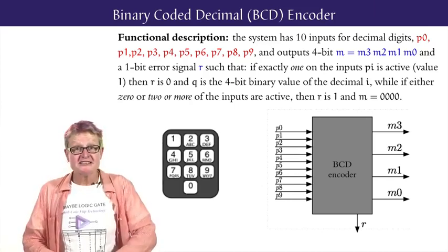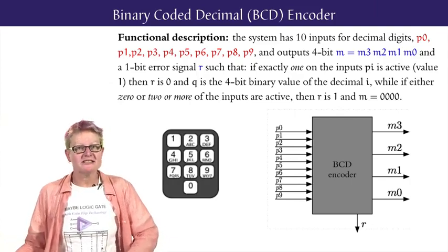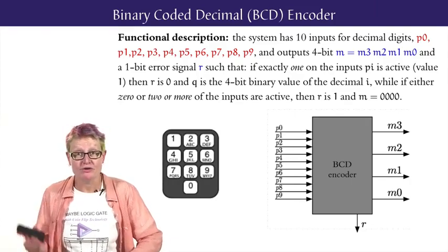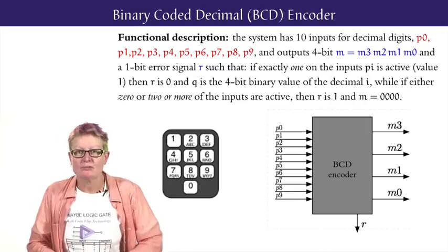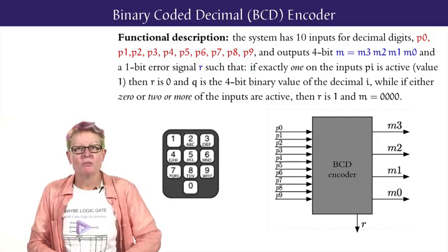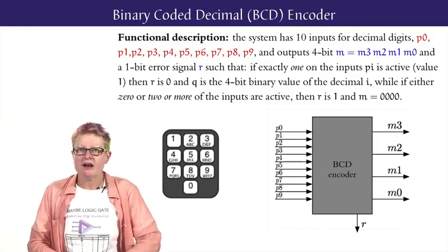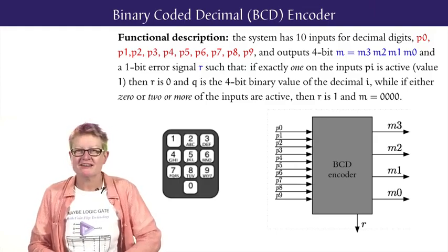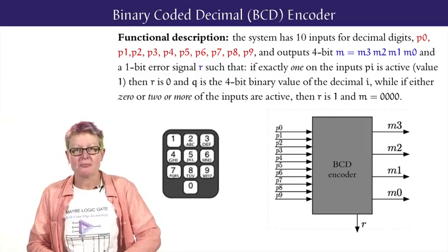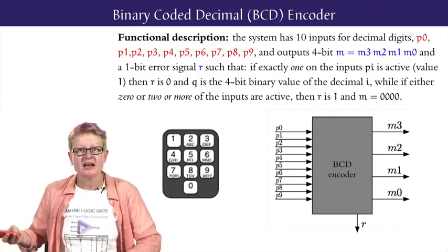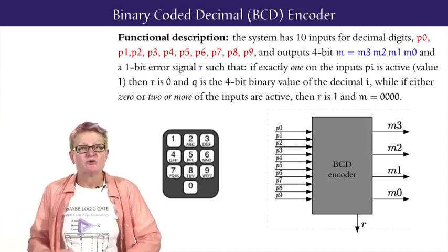Our first example is a very common digital system that we encounter every time we press a button on the keypad of our mobile phone. A BCD or binary coded decimal encoder has the job of outputting the 4-bit binary code for a decimal digit i between 0 and 9, when input i is the only active input. This corresponds to cleanly pushing the button for the decimal digit i.